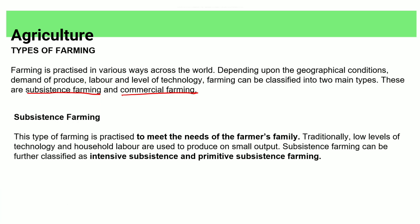Farming can be done to meet the needs of a family — this is called subsistence farming. There are two types: intensive subsistence and primitive subsistence.